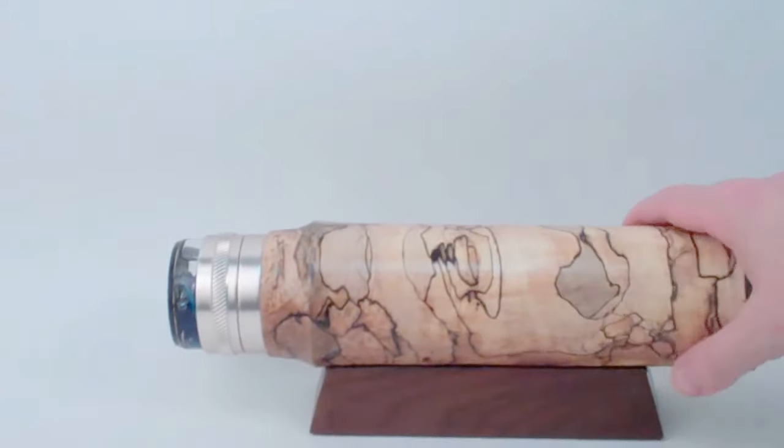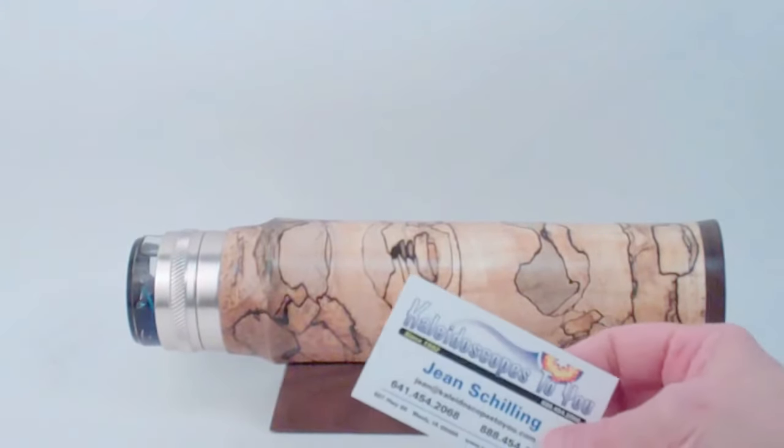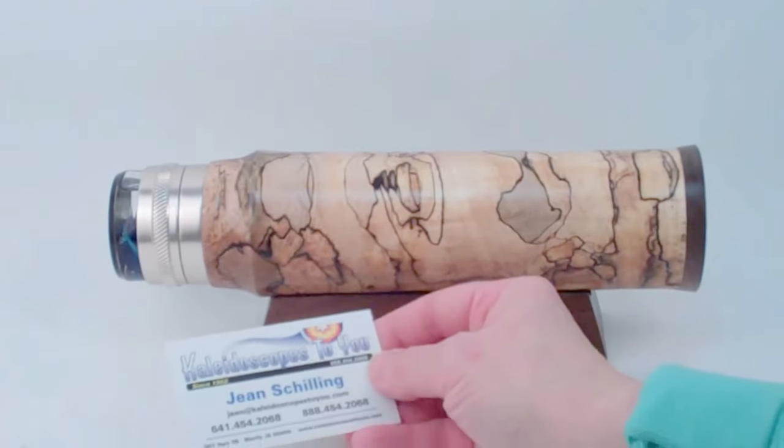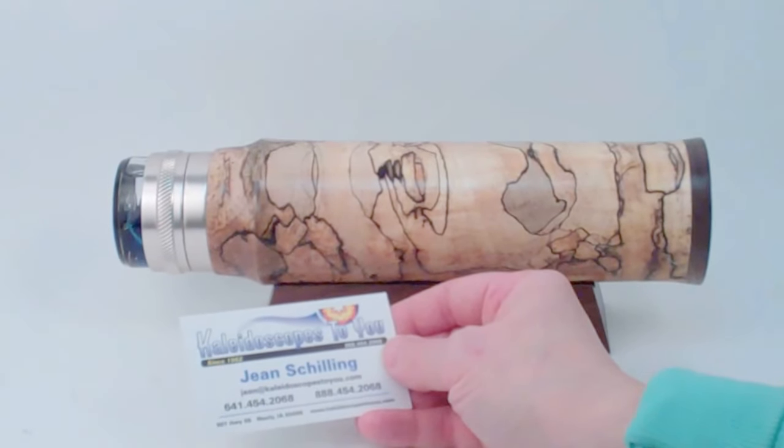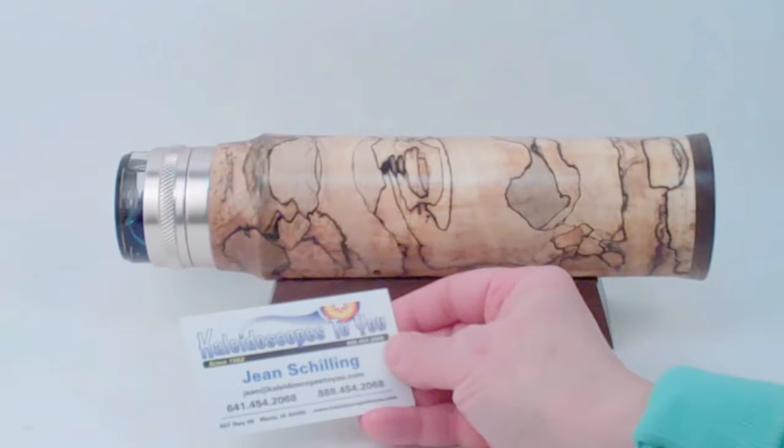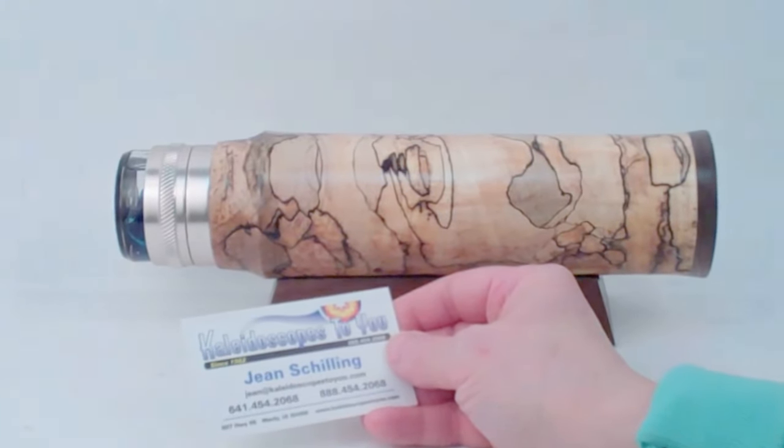This is a Sierra series kaleidoscope in spalted maple with walnut, handcrafted by Peggy and Steve Kittleson, and currently available at Kaleidoscopes2U.com.